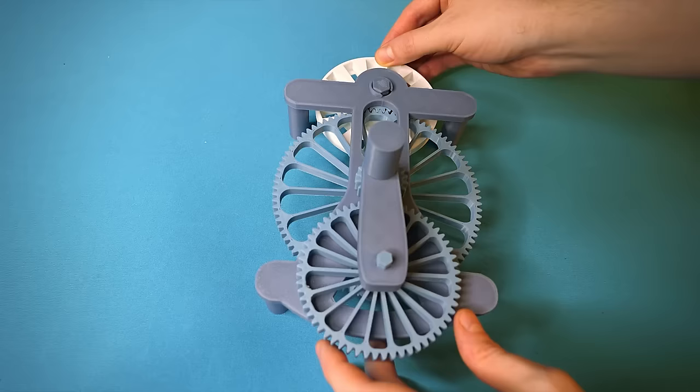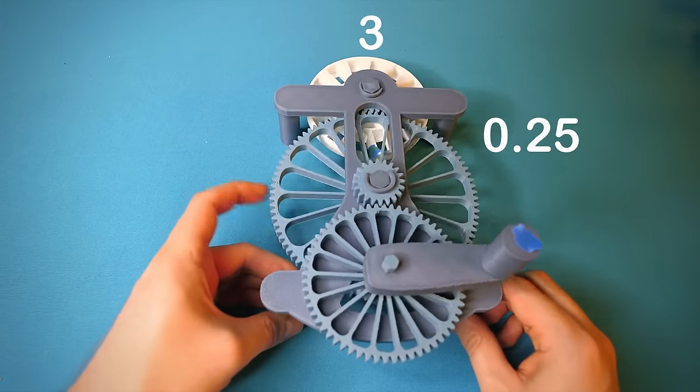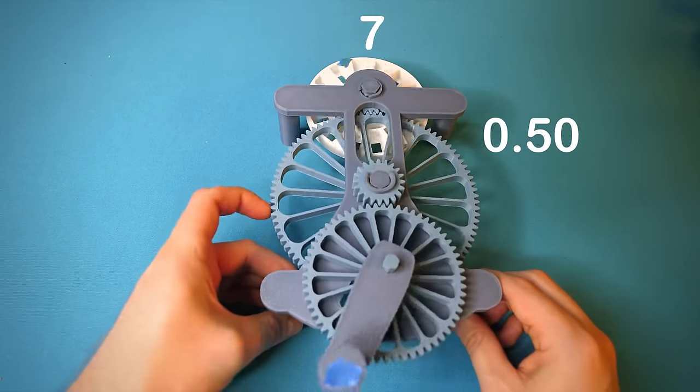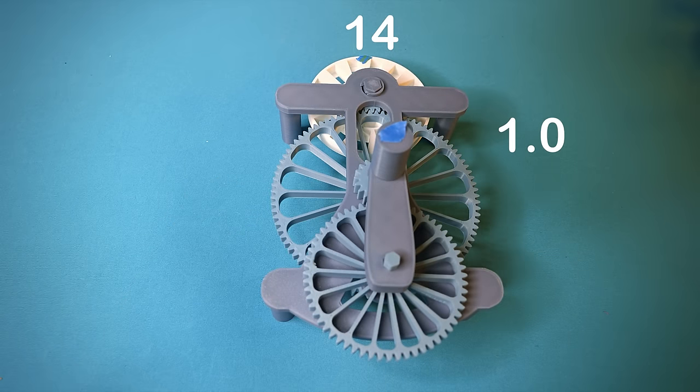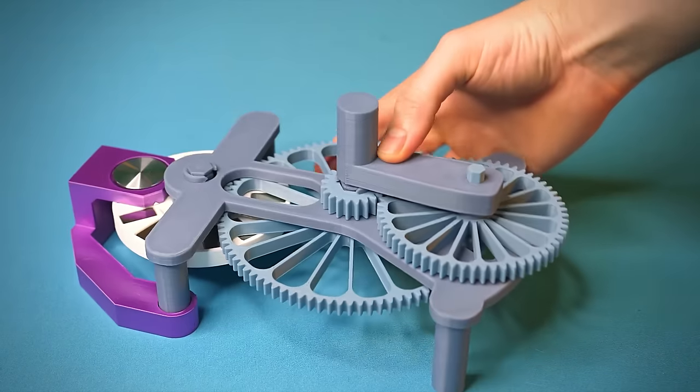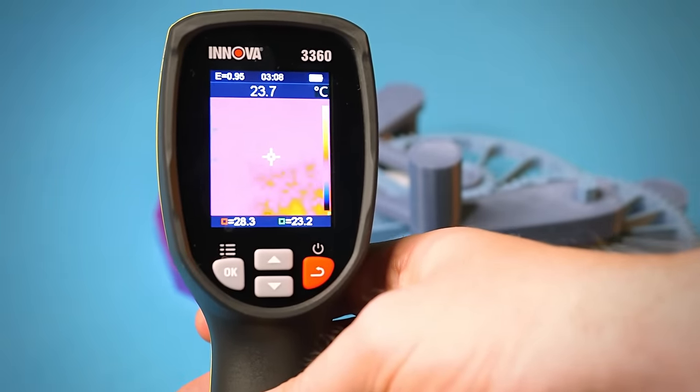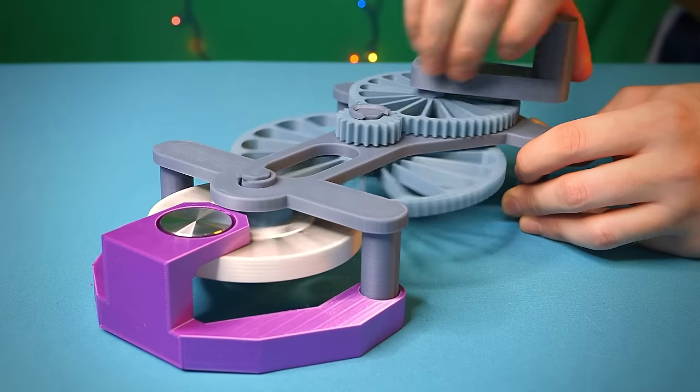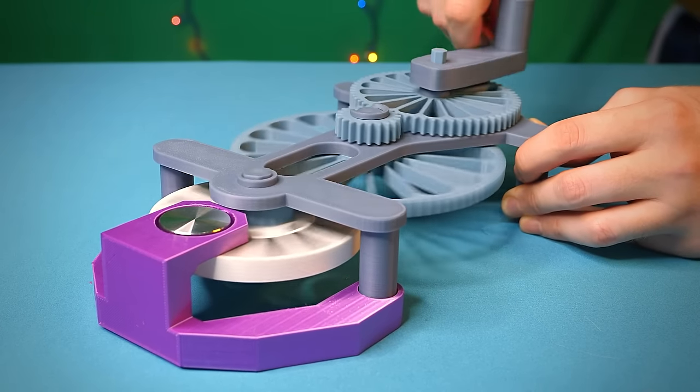I'm actually not sure what the gear ratio is, so let me check by counting the revolutions. Okay, looks like one rotation of the crank rotates the magnet wheel 14 times. That's not bad. Checking the temperature with my thermal camera, you can see... Well, actually, you can't even see the aluminum since it's room temperature. So let's make a few rotations to see if we can even heat up this metal with the alternating magnets.